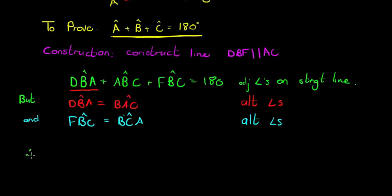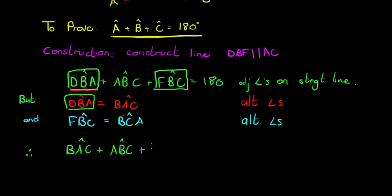Therefore, now what I found is I've got a different thing that I can substitute for DBA. DBA can be substituted with BAC. ABC I don't need to substitute. And I've got a different thing to substitute FBC with - FBC get substituted with BCA. And all I did was substitute into this original equation that added up to 180 degrees, and that's what I wanted to prove - that angle ABC is equal to 180.